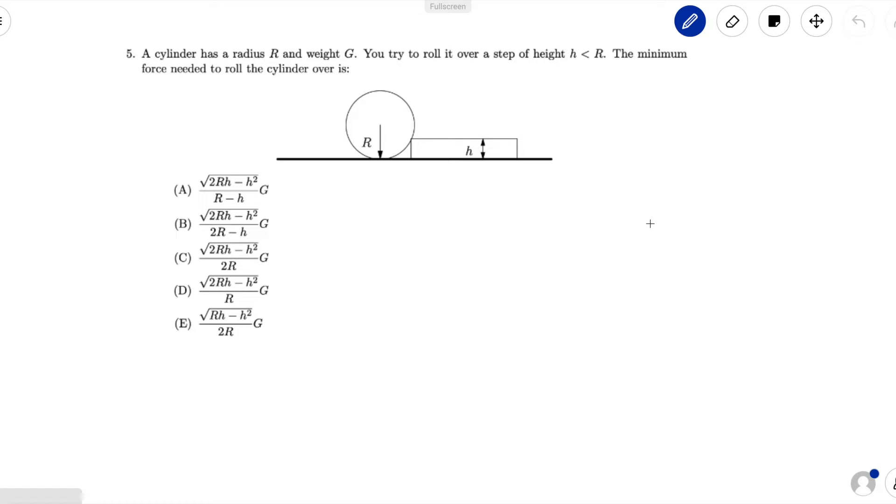This problem reads: a cylinder has a radius r and weight g. You try to roll it over a step of height h which is less than r. The minimum force needed to roll the cylinder over is one of these five options.